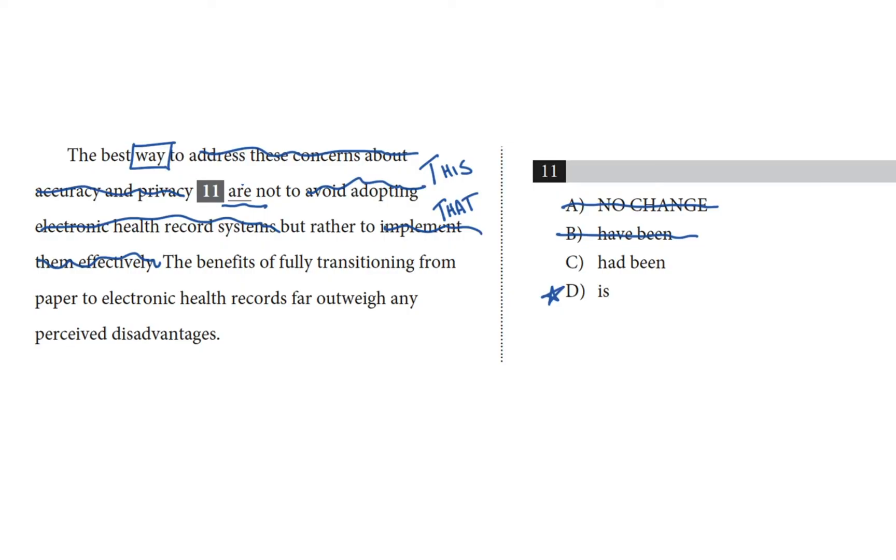And now we're looking at tense agreement. Should we choose C or D? Past tense or present tense? Well, the best way to look for tense alignment is to look for other verbs in the rest of the paragraph and then find out their tenses. So let's read into the next sentence. The benefits of fully transitioning from paper to electronic health records far outweigh any perceived disadvantages. Okay, so the subject is benefits, and the verb is outweigh. So benefits outweigh. That's in the present tense. It's a general statement of fact. So let's carry that back to our choices. We're looking for a present tense option, and that leaves only D. C is in past tense, and that means it doesn't match. So D is our answer.